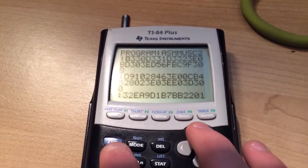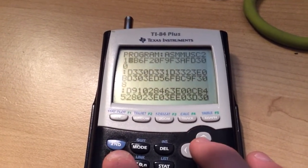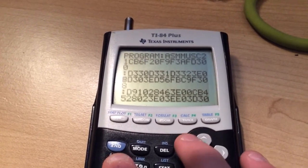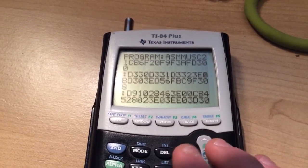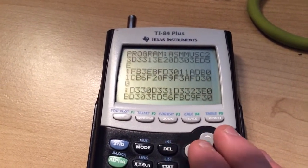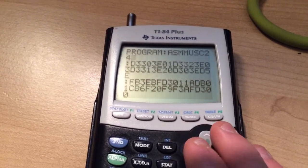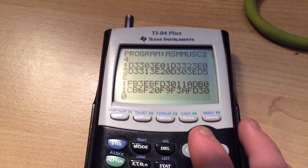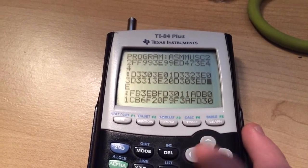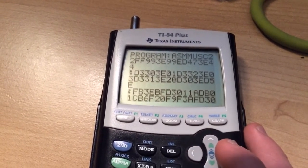So the way that this works is by outputting repeatedly. You set up an interrupt. The interrupt is right here, this is enable interrupt right here, that's FB.